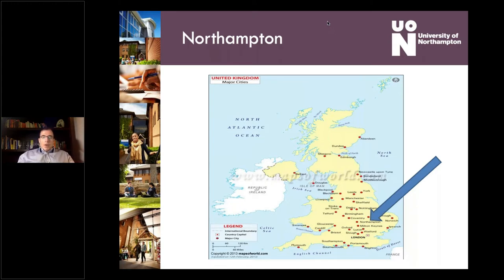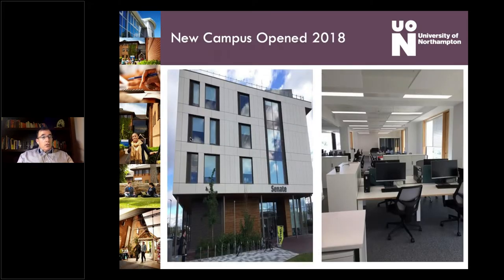Where is it? Well, it's about 100 kilometers north of London. Northampton is an old historic town — I'm pointing to it there with a big arrow on a map of the UK — about an hour by train north. And in the town of Northampton you will find the University of Northampton campus. The university opened a brand new campus back in 2018, now actually right in the center of the town, on a lovely sort of greenfield site.